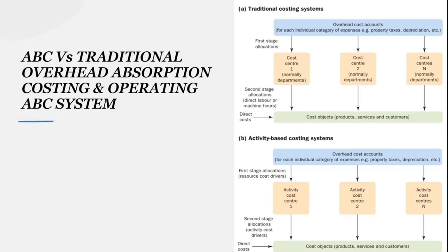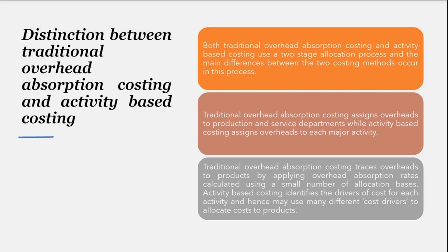In the traditional costing system, support overheads are absorbed simply on production volume — that is, labor or machine hours. But this system tends to over-cost high-volume products, which cause relatively little diversity, and under-cost low-volume products, which cause greater diversity and draw upon support services more. In any attempt to make overhead attribution more realistic, there have been various product costing developments in recent years. One of the most influential has been activity-based costing.